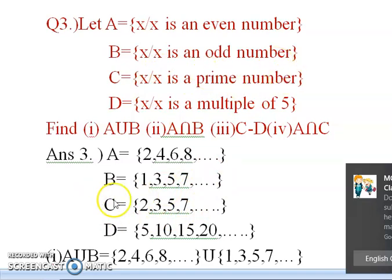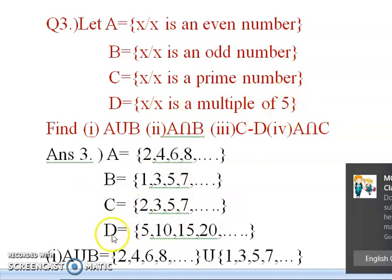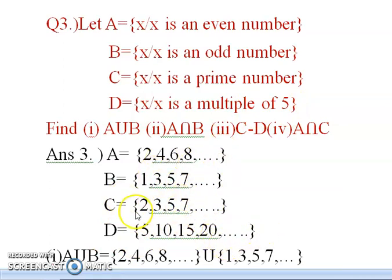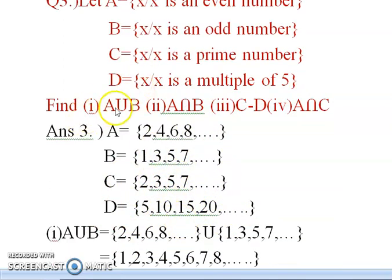C = {x : x is a prime number}, so the prime numbers are 2, 3, 5, 7, … and so on. D = {x : x is a multiple of 5}, so the multiples of 5 are 5, 10, 15, 20, … Now we have written all the elements in roster form. It is asking me for A union B.